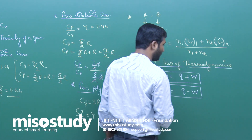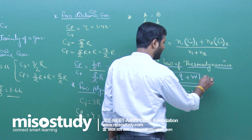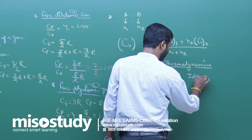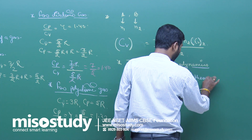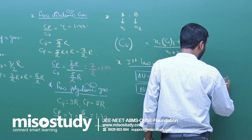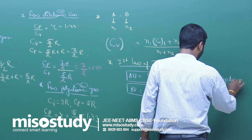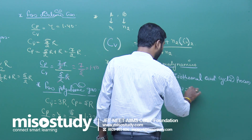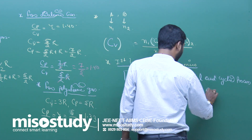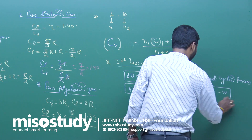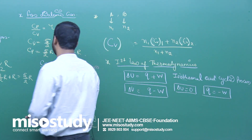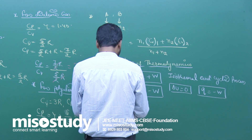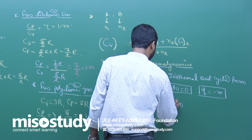For a cyclic process and isothermal process, the value of delta U is equal to zero. So we get q equal to minus w — if q is positive then w will be negative and vice versa. For an adiabatic process, q is equal to zero.